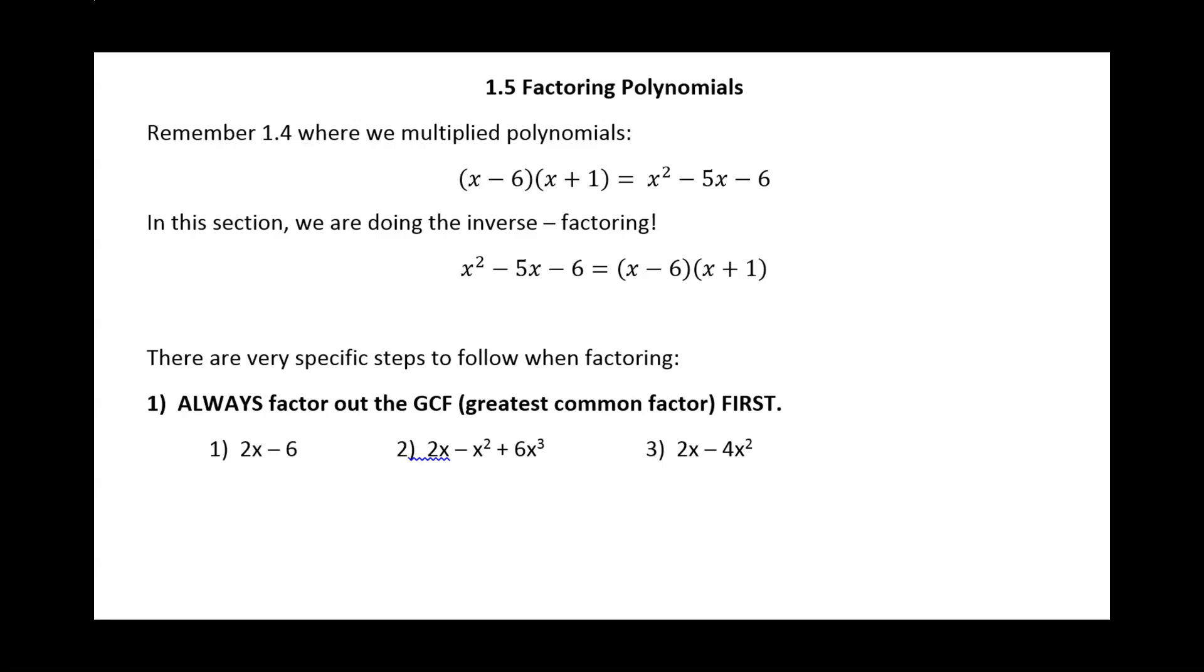The method that we used to do that was called the FOIL method. It just gave us a way of making sure that we multiplied each of our pieces. Now we want to do the exact opposite of that. We want to take that trinomial that we created and factor it back down to the two binomials that it came from. So basically we're doing the inverse process of what we were doing in our last lesson.